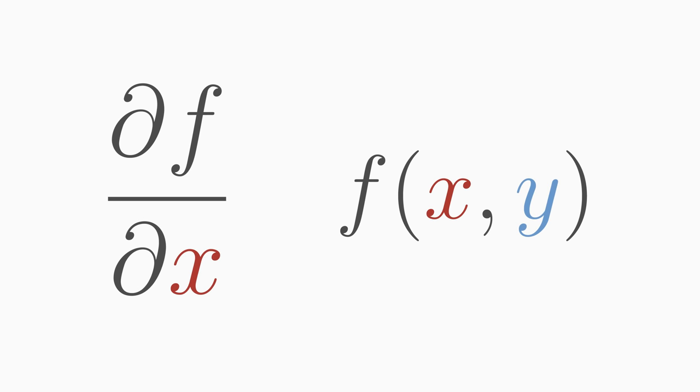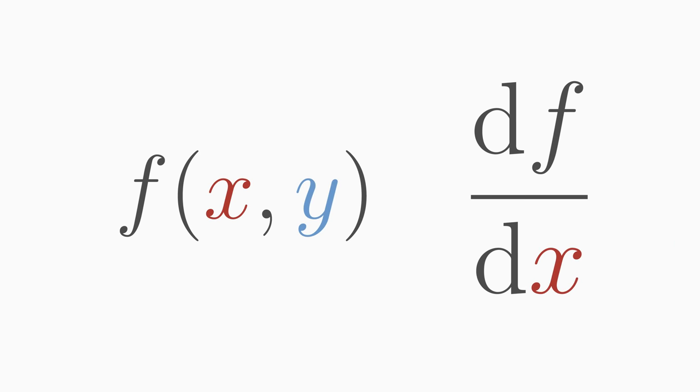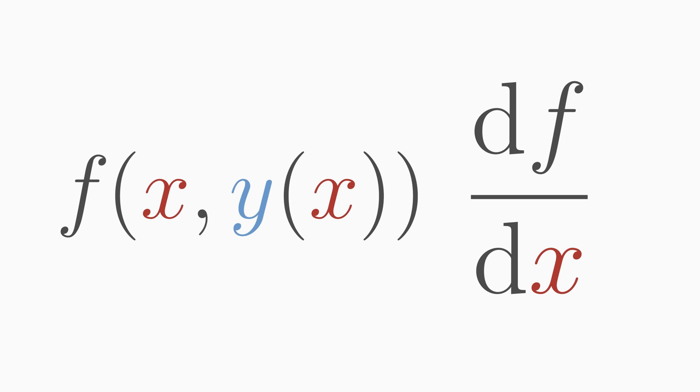In the partial derivative, written with the curve del, y is independent of x. In the total derivative, which is noted with a d, y can depend on x, so the change of the variable x also affects the value of y.